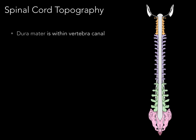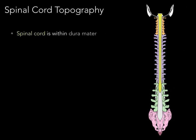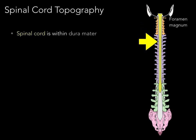Here we have a coronal section in a posterior view of the vertebral canal, showing the dura mater coursing all the way down to the S2 vertebral level where it attaches. If we cut open this dura mater, we see the spinal cord within it, which is within the vertebral canal. It arises from the foramen magnum — that hole in the base of the occipital bone — and courses all the way down to terminate at approximately the L1-L2 vertebral levels in an adult. The very bottom of the spinal cord is called the conus medullaris.